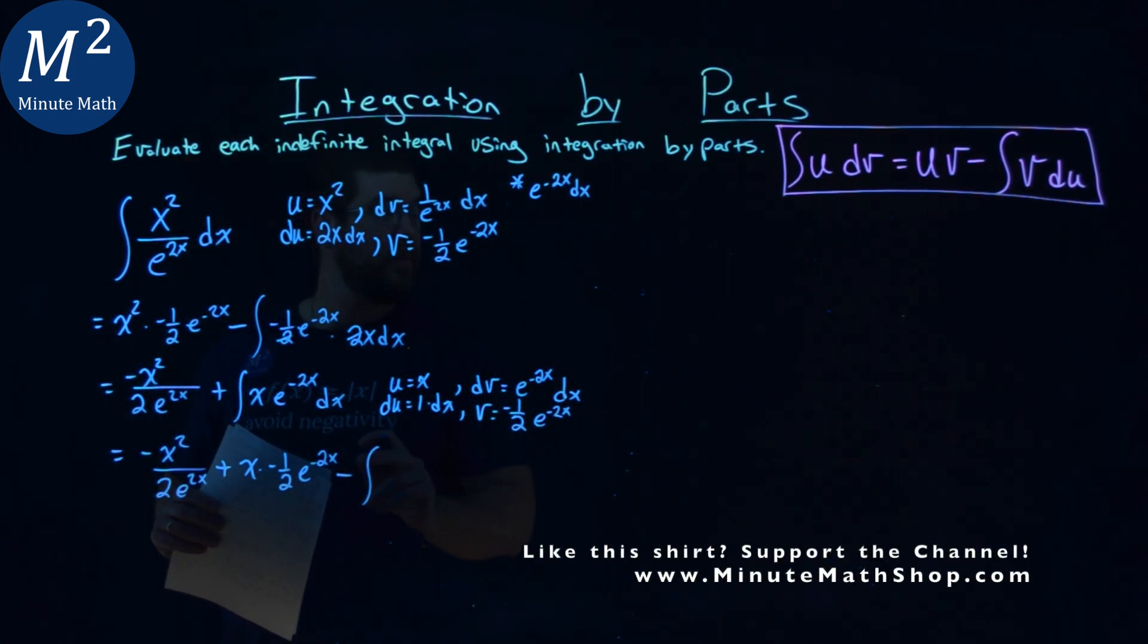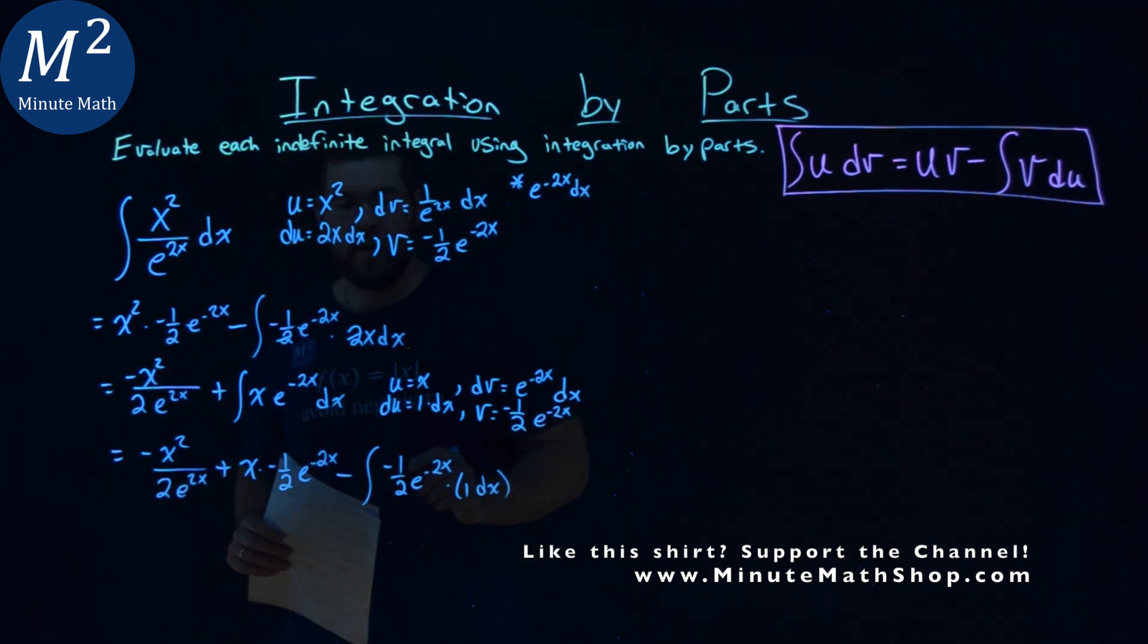minus the integral of v, which is, again, negative 1 half e to the negative 2x power, times du, which is 1 dx right there. All right. So let's go.